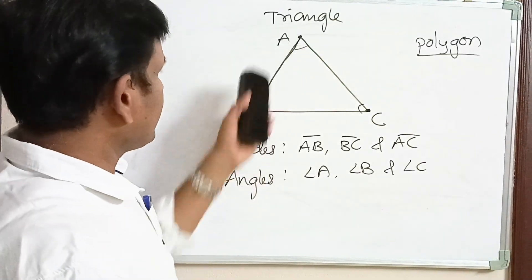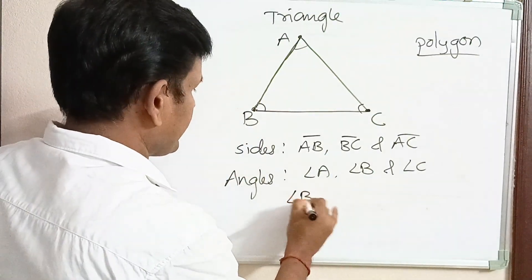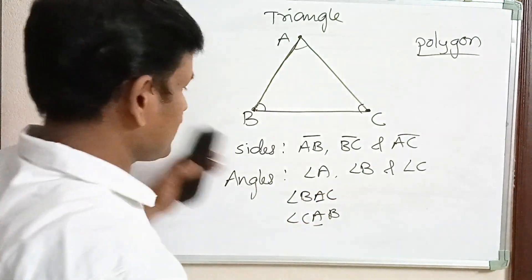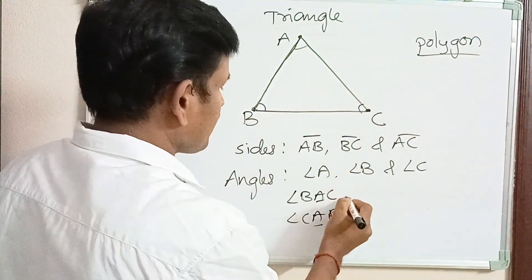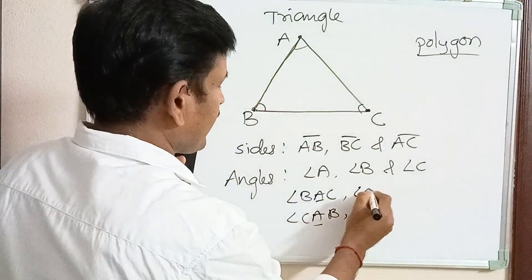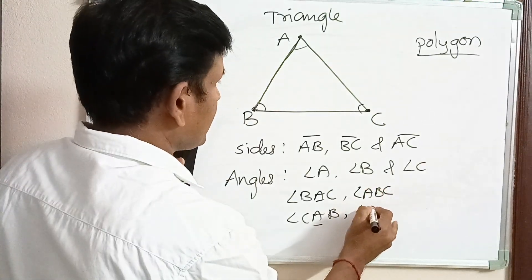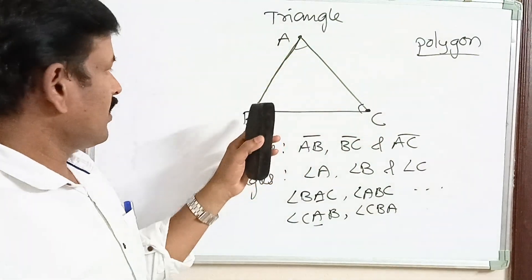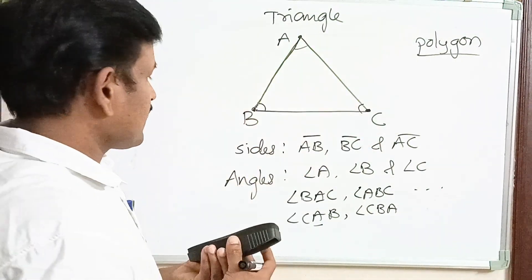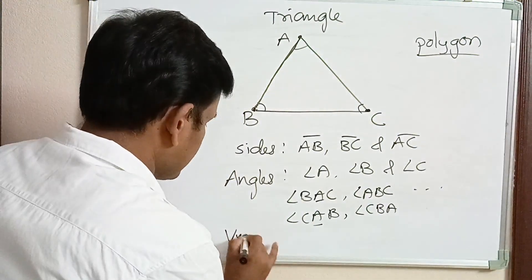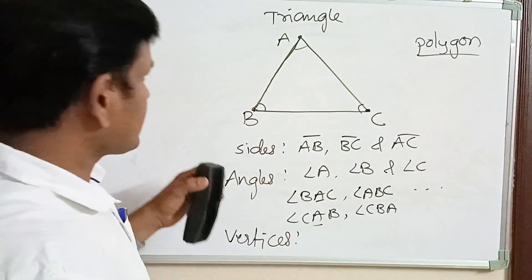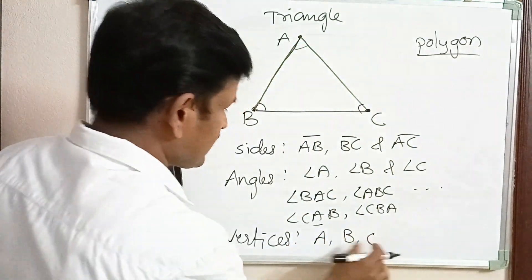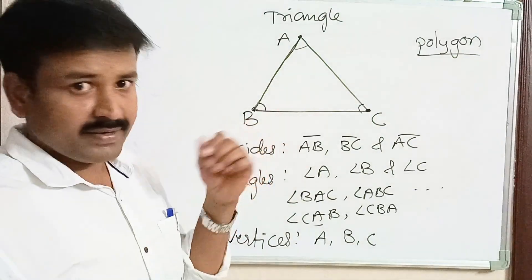Angle A can be written as angle BAC or angle CAB. Similarly, angle B can be written as angle ABC or angle CBA. Angle C can be written as angle ACB or angle BCA. These are the sides, angles, and vertices of a triangle. Vertices are the corners — vertices A, B, and C are the three vertices of triangle ABC.